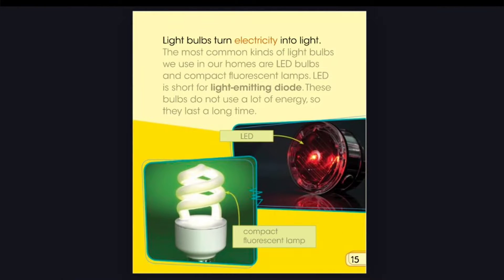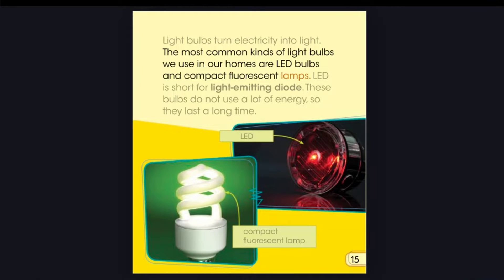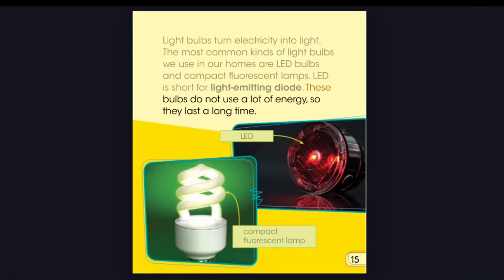Light bulbs turn electricity into light. The most common kinds of light bulbs we use in our homes are LED bulbs and compact fluorescent lamps. LED is short for light-emitting diode. These bulbs do not use a lot of energy, so they last a long time.